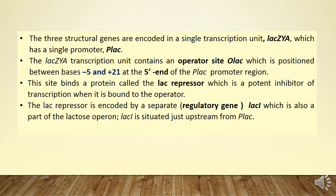The three structural genes lac Z, Y, A are in a single transcription unit having their own promoter P lac and operator site O lac. The operator site is positioned between minus 5 and plus 21 — the promoter's 5' end, and the operator site is positioned between those bases, minus 5 to plus 21. The lac repressor is encoded by lac I, which is situated upstream from P lac.